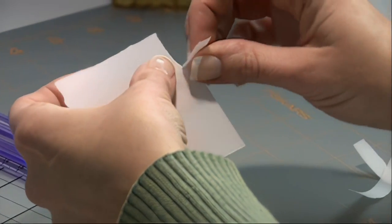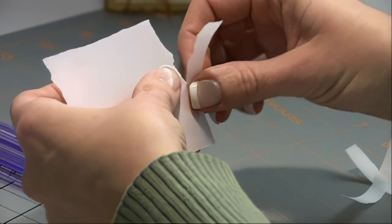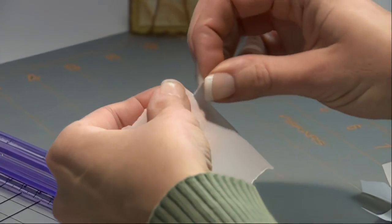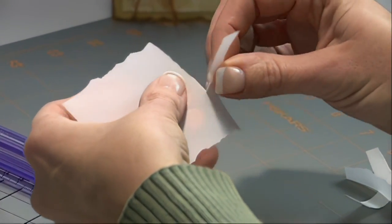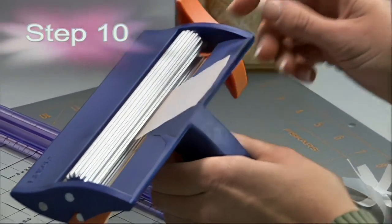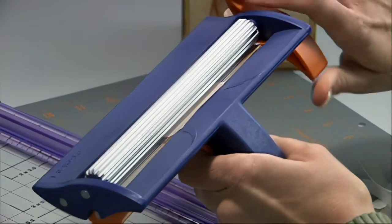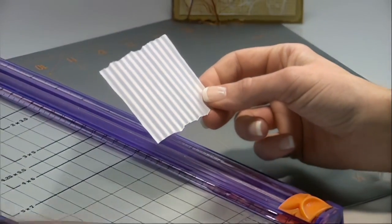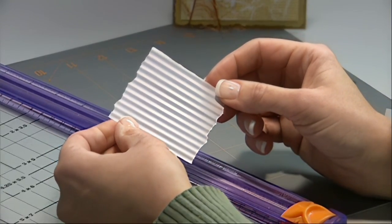Again going against the grain, take your time. Now we will take our piece of vellum and run it through our paper crimper. Remember the tighter the squeeze the more elevated the ridges will be. This will give our vellum texture and dimension.